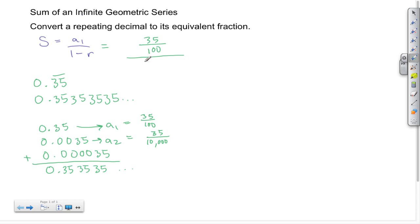...and I need to divide that by the difference of 1 minus r. To figure out r, r is a sub 2 divided by a sub 1. So in this case, a sub 2 is 35 over 10,000...